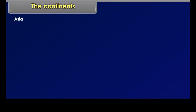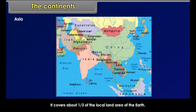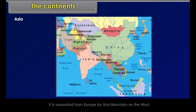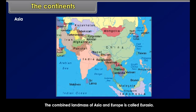Asia. Asia is the largest continent. It covers about one-third of the total land area of the earth. Asia lies in the eastern hemisphere. It is separated from Europe by the Ural Mountains on the west. The combined land mass of Asia and Europe is called Eurasia.